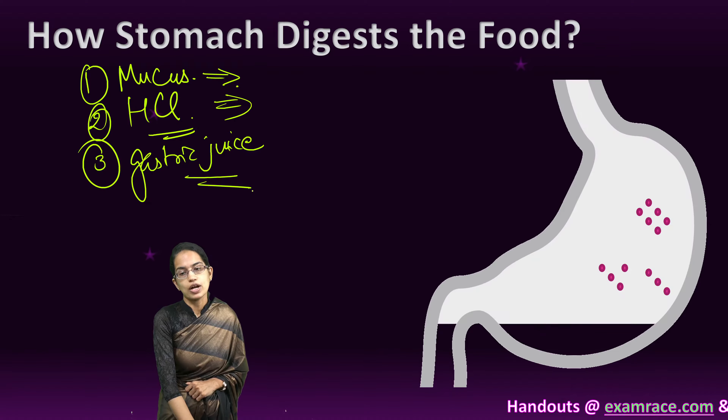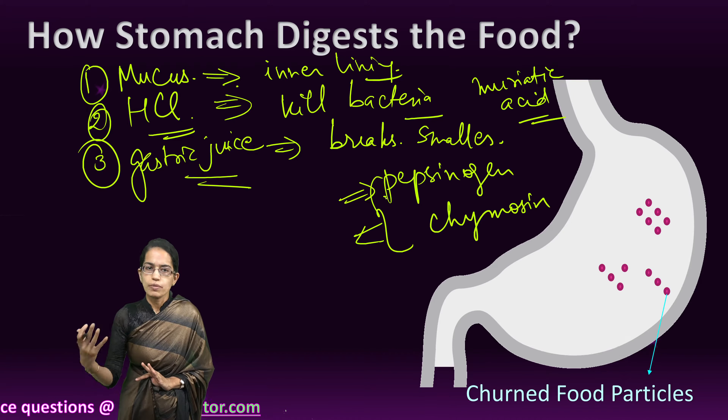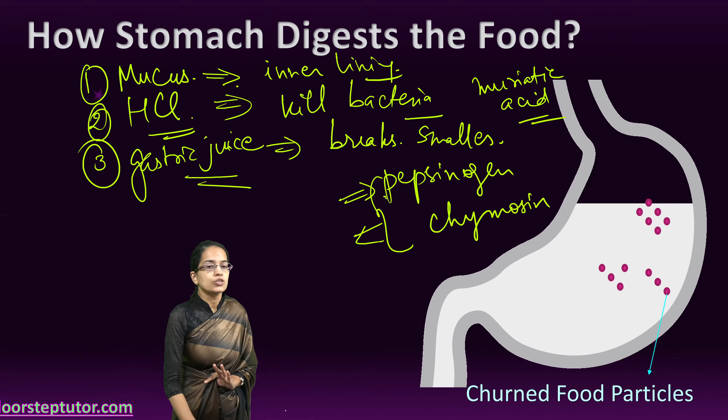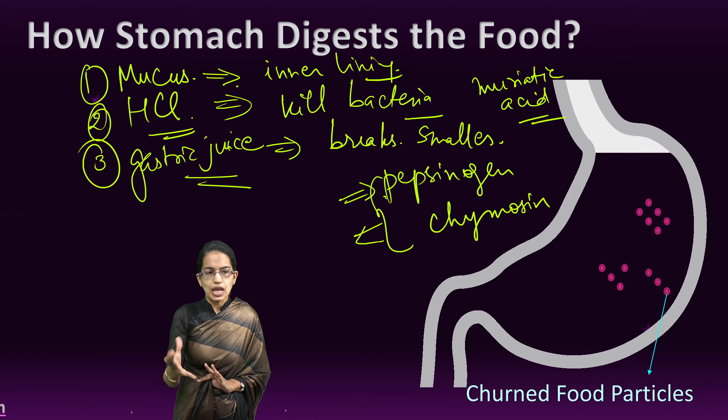Gastric juices are very important. Two of the important ones are pepsinogen and chymocytine. Pepsinogen acts on proteins and, with the enzyme pepsin, breaks them into amino acids or simpler forms. This is the major idea of how the stomach digests food.